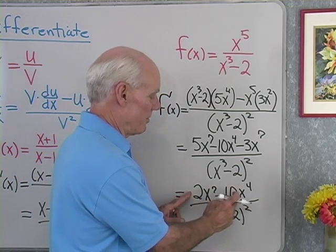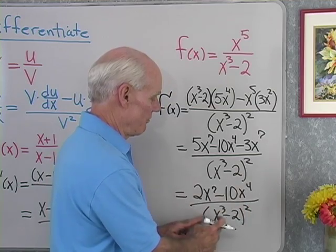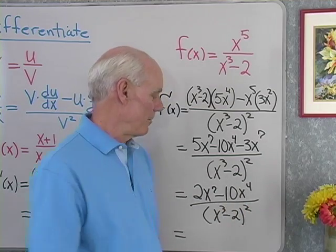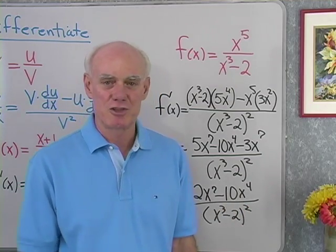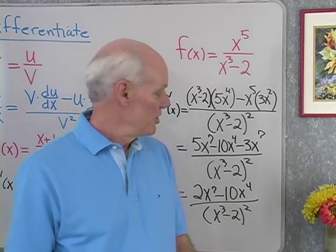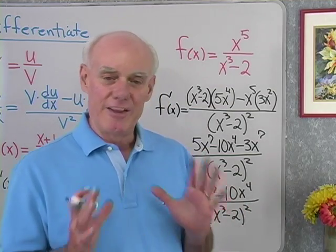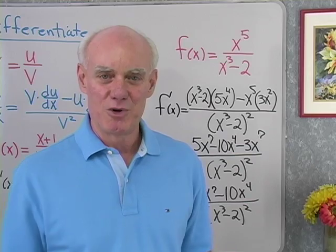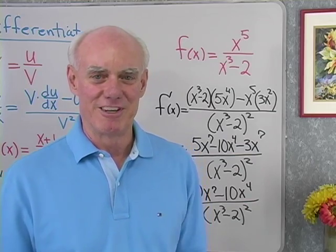2x to the seventh minus 10x to the fourth, all divided by x cubed minus 2 quantity squared. And that's a look at the quotient rule for derivatives.